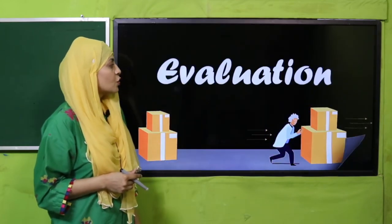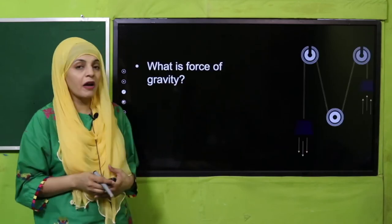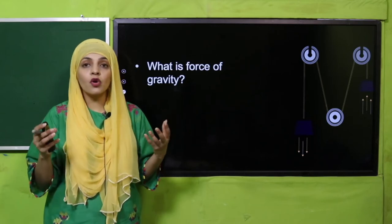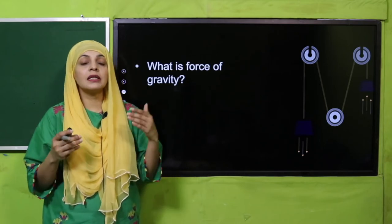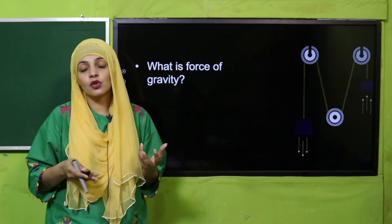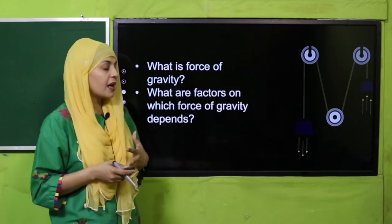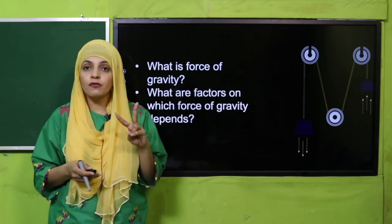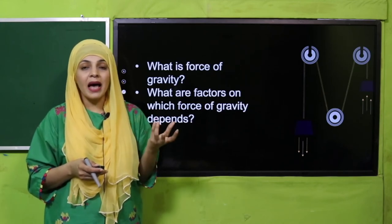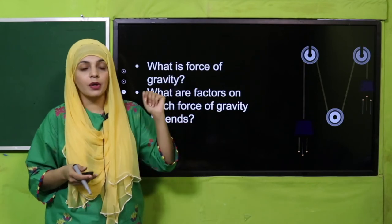Now is the time for evaluation. What is force of gravity? The force between the earth and objects which pulls everything towards itself is known as the force of gravity. What are the factors on which force of gravity depends? It depends on two factors: mass and distance from the earth.